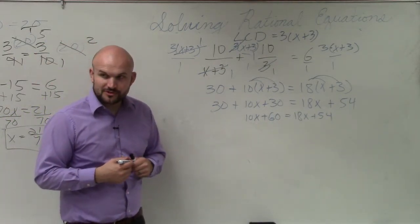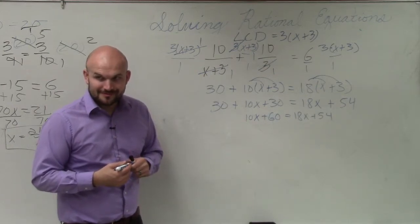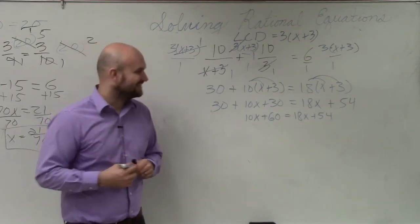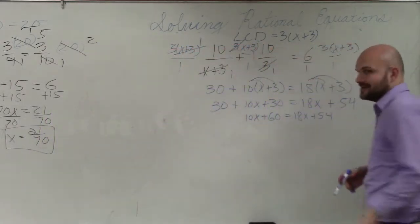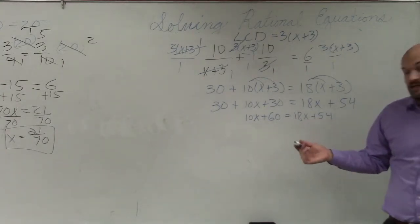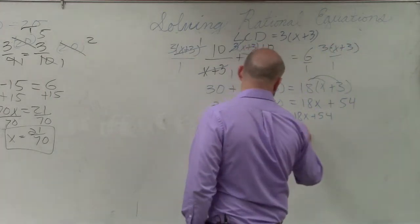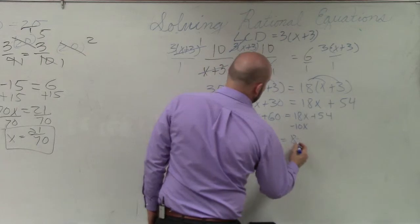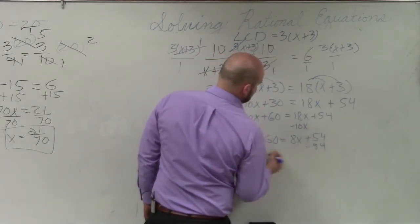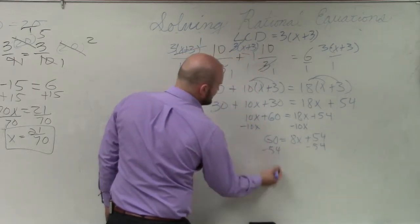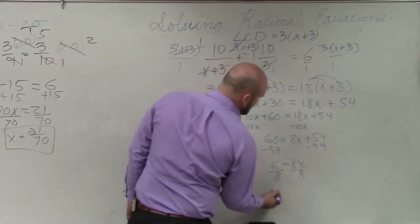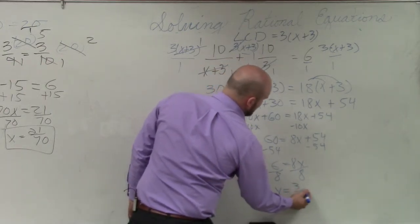Then we can just determine which side do we want to get the x to. So we take, now we just solve for x. So we get the x on the same side, you're going to subtract the 10x. So we have 60 equals 8x plus 54. Subtract 54. And what I get here is 6 equals 8x. Divide by 8. x equals 3 fourths.